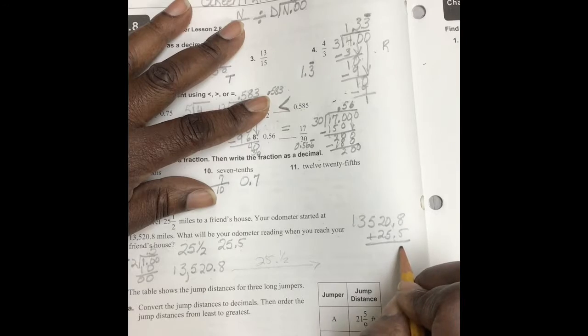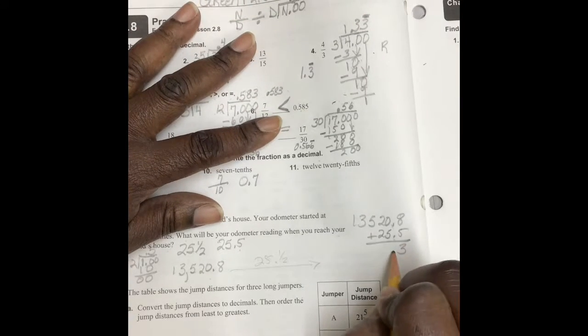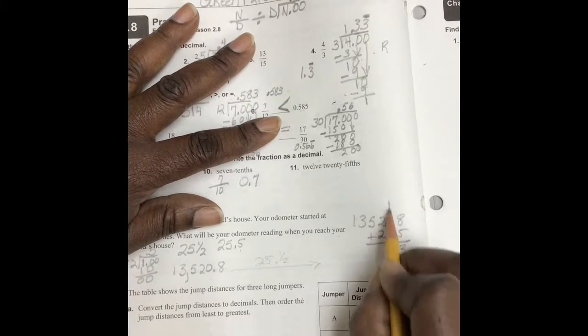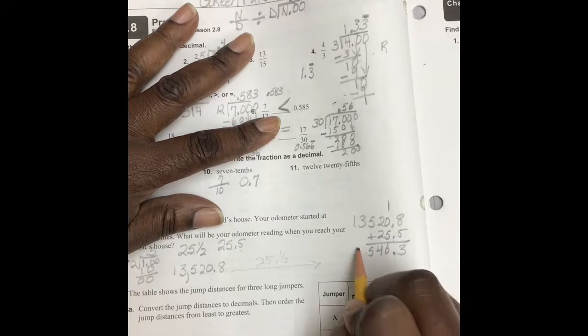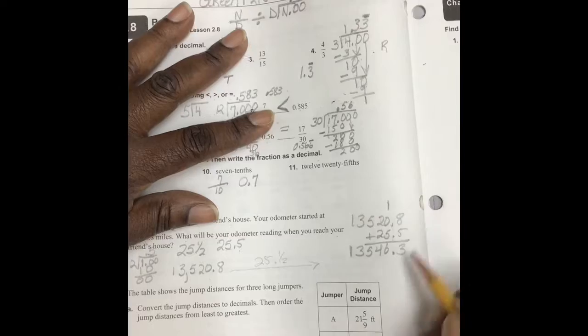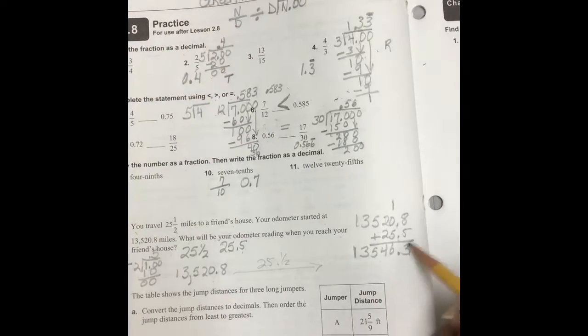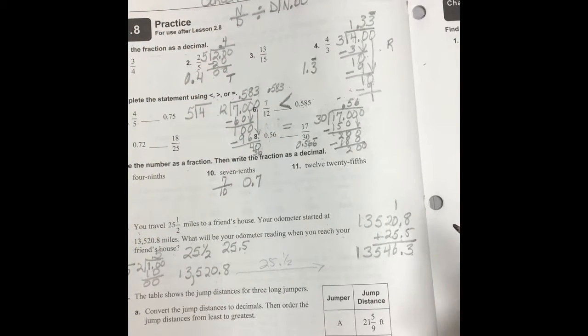8 plus 5 is going to give us 13. 5 plus 1 is 6. This is 4. This is 5. This is 3. And this is 1. That's our total amount at the end of our trip.